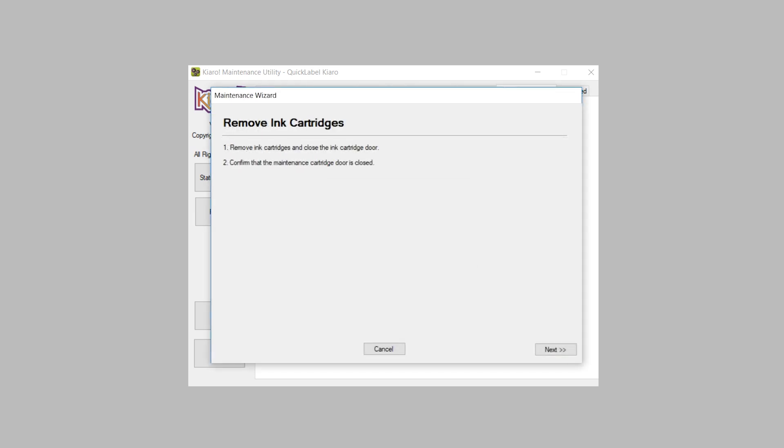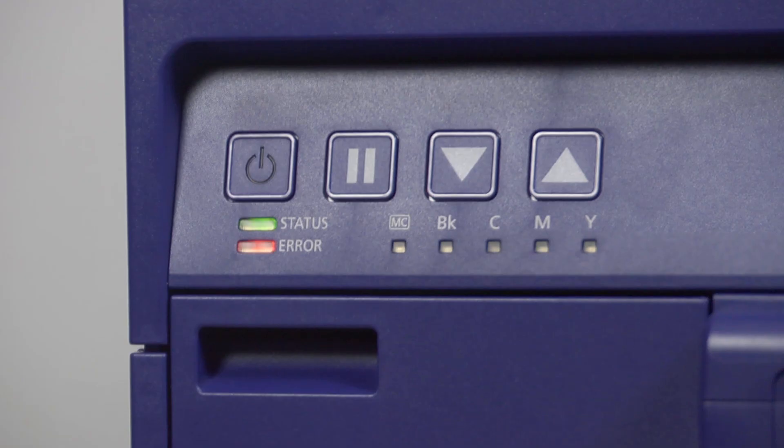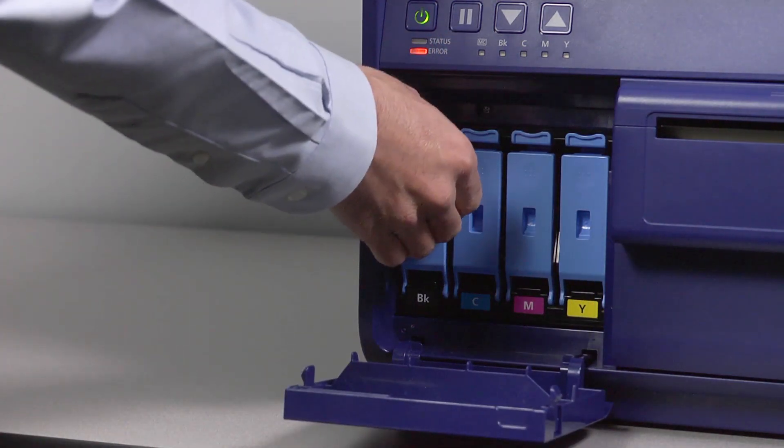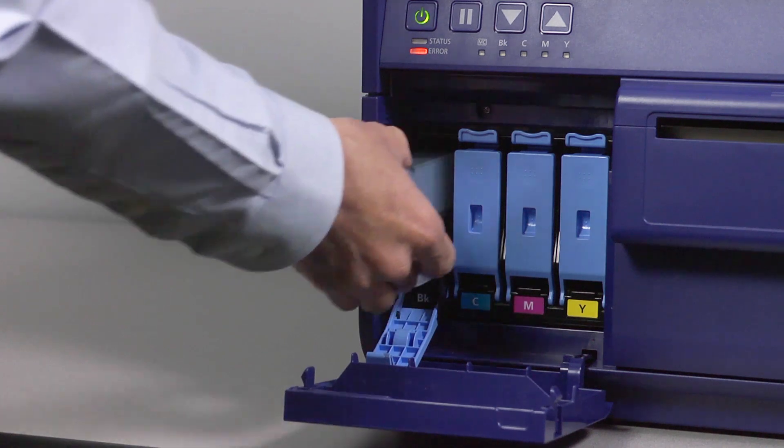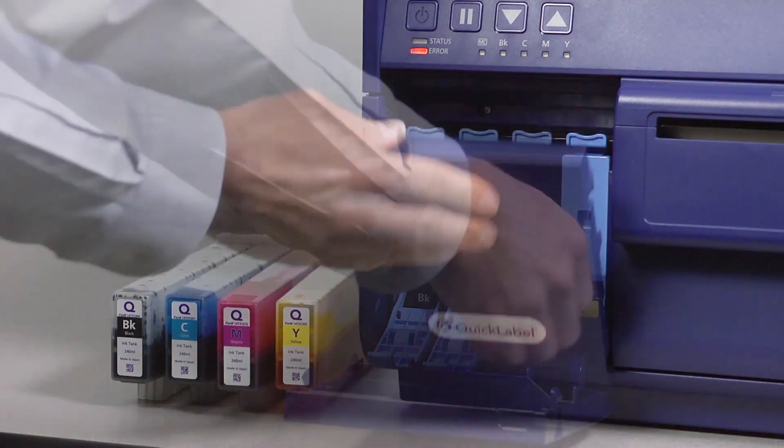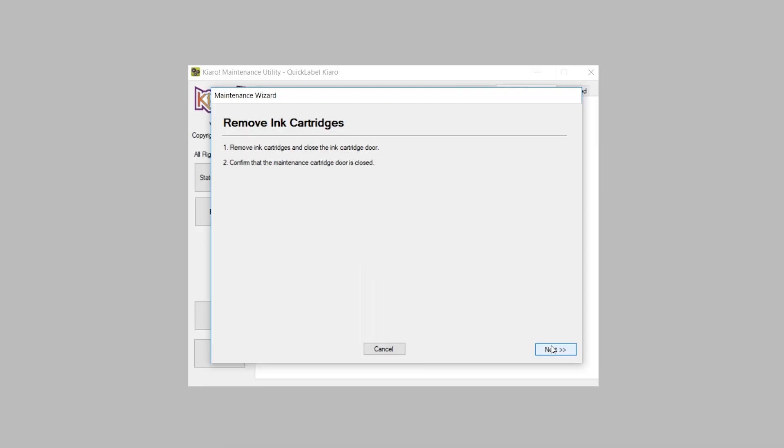The software will prompt when the ink cartridges are ready to be removed. At this point, the indicator lights will appear like this. Open the ink cartridge door and slowly remove the ink cartridges from the printer. Close the latches and the door. Click Next on your computer.